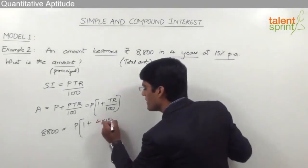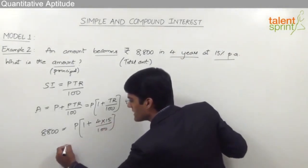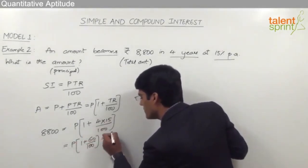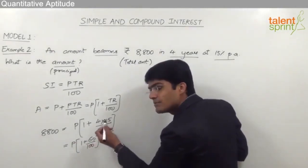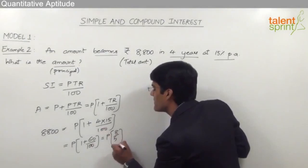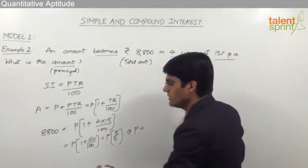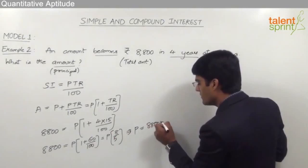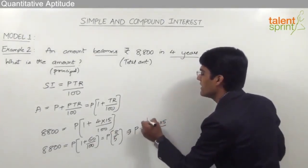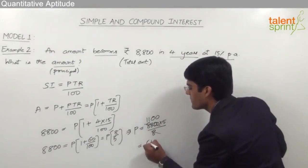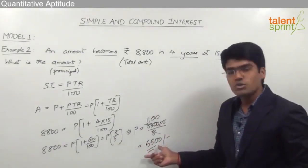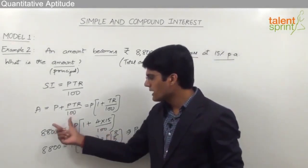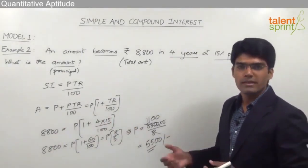So this becomes P × (1 + 60/100) = P × 160/100 = P × 16/10 = P × 8/5. Therefore, 8,800 = P × 8/5, which gives P = 8,800 × 5/8. Since 8,800 divided by 8 is 1,100, we get 1,100 × 5 = 5,500 rupees. The principal is 5,500 rupees.